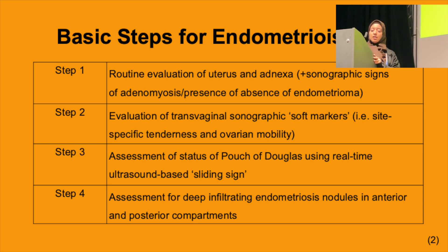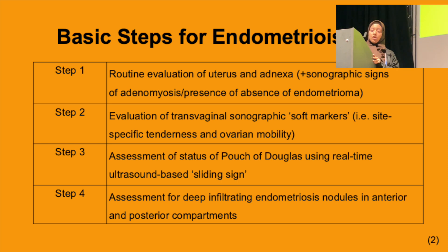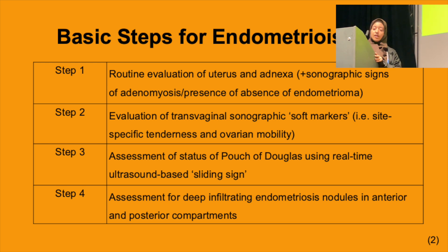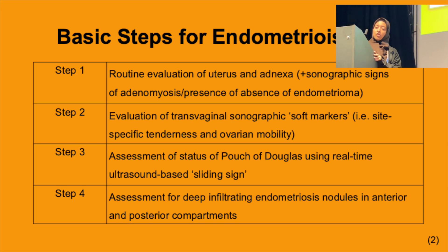Step three is the assessment of the posterior compartment, the pouch of Douglas. Step four also assesses the anterior compartment, looking for signs of deep infiltrating endometriosis in the rectosigmoid and in the bladder.